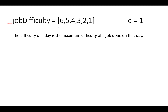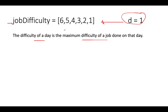In this question, you're given an array that specifies the difficulty of each job. The number of days tells you how many days you have in total to perform these jobs. The difficulty of a particular day is defined as the maximum difficulty of any job done on that day. For example, if all tasks are on a single day with difficulties six, five, four, three, two, one — the maximum is six, so the answer is six.